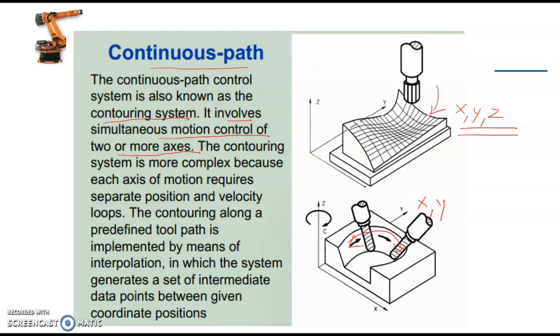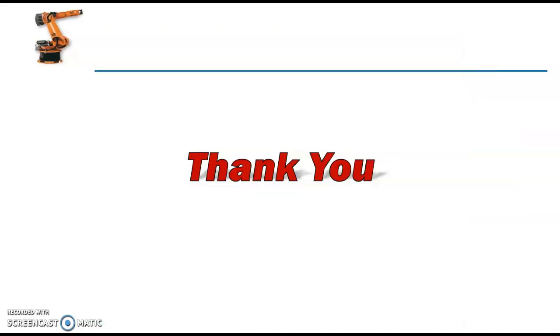Out of the three systems, the point-to-point and straight cut systems are possible with the older punched card type of NC machines. But the continuous path system is possible only with CNC controls, that is computer numerical controls, because this one has the highest level of control. Thank you for watching.